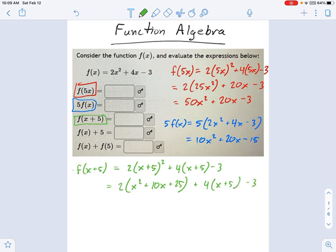Then we still have 4 times x plus 5 minus 3. So now we distribute the multiplication. 2x squared plus 20x plus 50, that's the first one. And over here we get 4x plus 20. And then at the end we get minus 3.